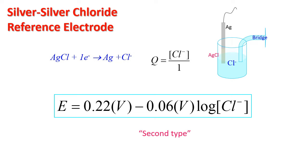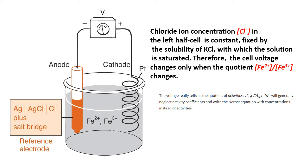Silver-silver chloride is the most common reference electrode. Chloride ion concentration in the cell is constant, fixed by solubility of KCl, with which solution is saturated. Alternatively, you can simply keep concentration of KCl constant. Therefore, the cell voltage changes only when the quotient Fe2+ / Fe3+ changes.